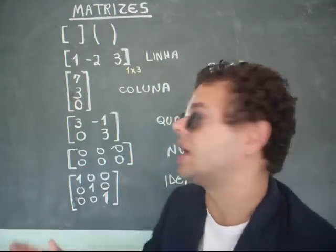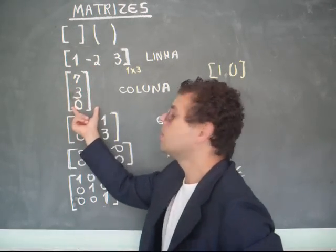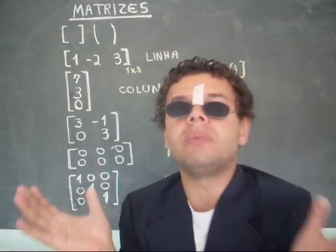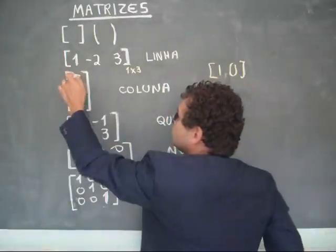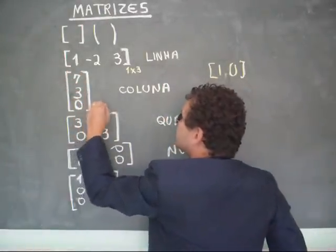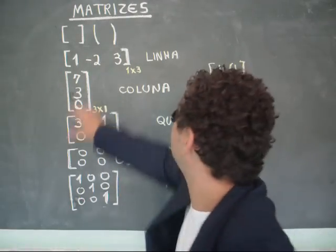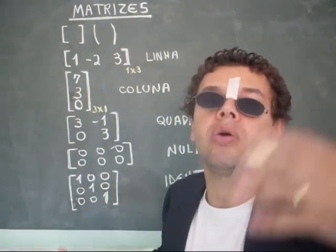O que é uma matriz coluna? É quando eu trabalho em uma coluna. Se eu tenho uma coluna, então eu tenho o quê? Um, dois, três. Três linhas e uma coluna. Sempre prevalecendo a linha e depois a coluna.